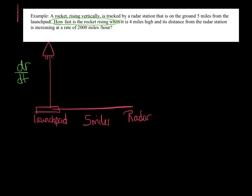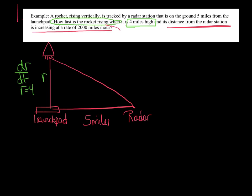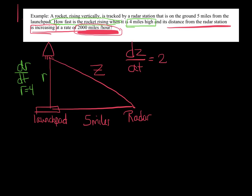Specifically when it's four miles high. So I'm going to say the rocket height equals four, and I'll put an R here to represent that height of the rocket. The distance from the radar station is increasing at a rate of 2,000 miles per hour. I'm going to call this side Z. It's a rate — a something per something — so that's actually dZ/dt. And I know it's positive because of the word 'increasing,' so it's positive 2,000 miles per hour.